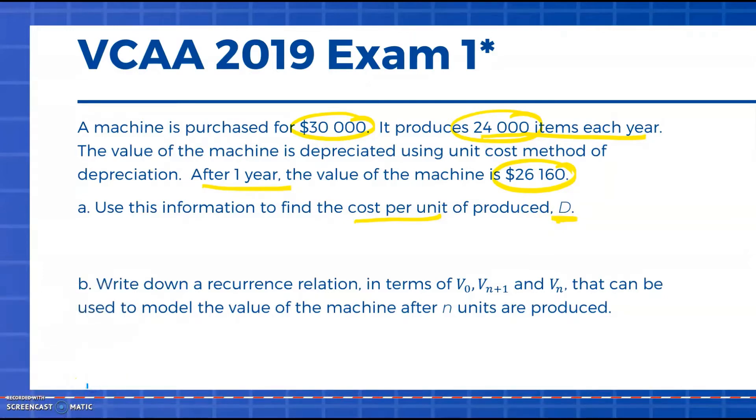Now we're going to use that information to find the cost per unit or the value of D. First we want to work out what has been that depreciation amount over the year. To find that value change we do $30,000 minus $26,160 to get $3,840. Remember that is the value for the whole year, but it's produced 24,000 items, so we need to divide that value change by 24,000 to get our unit cost of 0.16 or 16 cents.